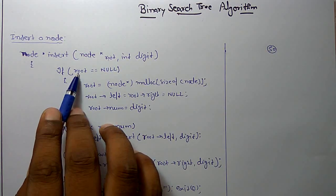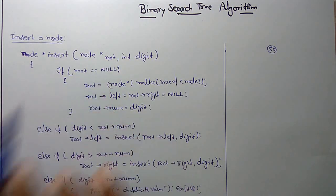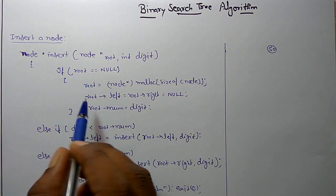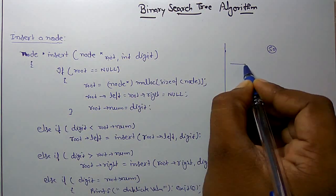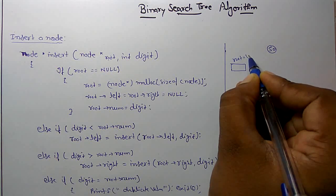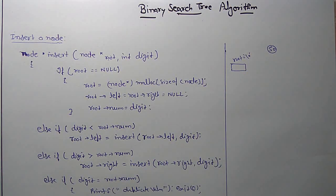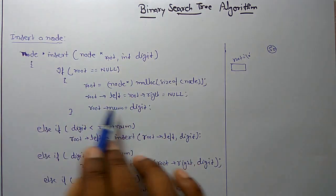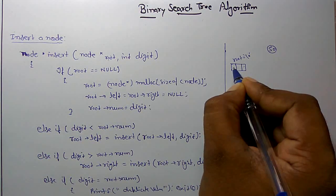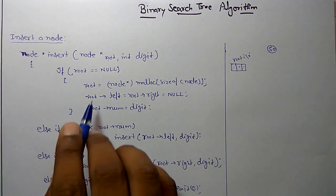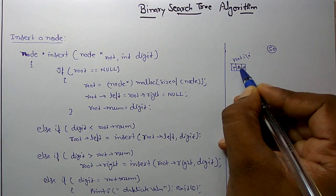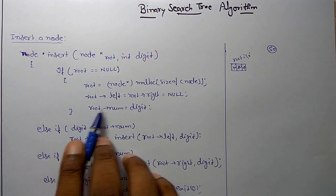So if root equals null — root is the current binary search tree position and digit is the value you want to add in that binary search tree. If root equals null, it means your root is null, meaning no value exists. In that case, you allocate size through malloc. Now that root has left and right pointers, and here you can add information. So when the first node is created, you add null to root's left, null to root's right, and assign the value — that is 50. So root->num equals digit.